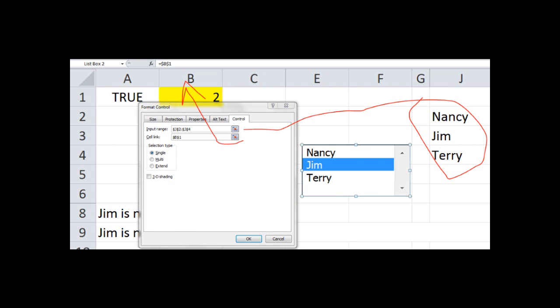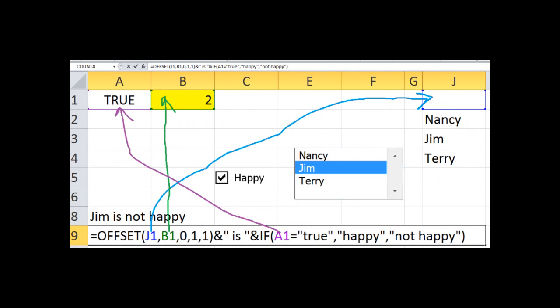Once that's done, make sure that the selection type is single. You have single, multiple, or extend. We want single. Once you do that, click the OK button. Now we have everything we need to actually get started with the formula.